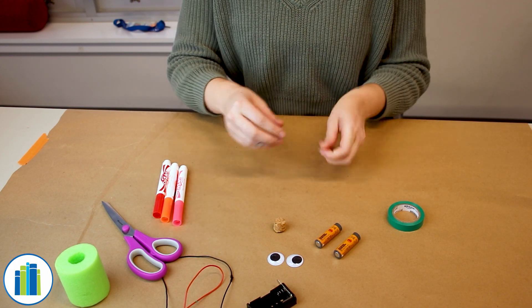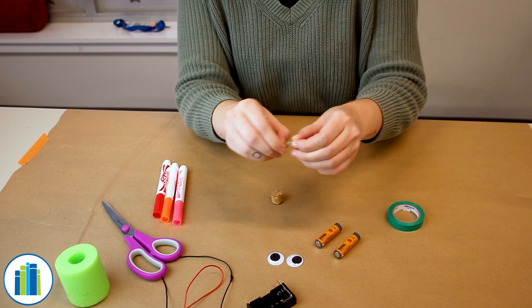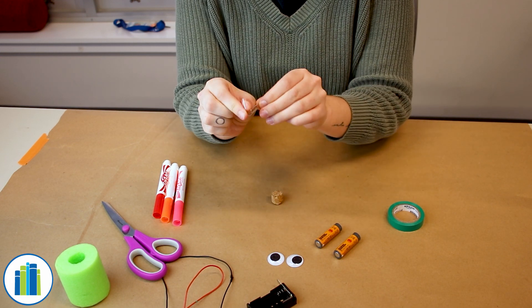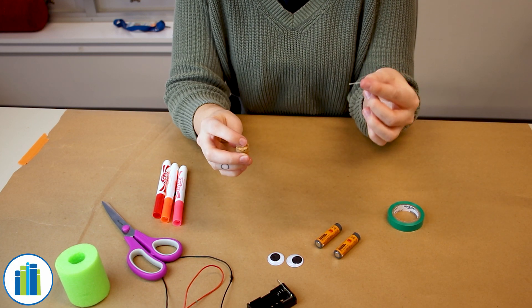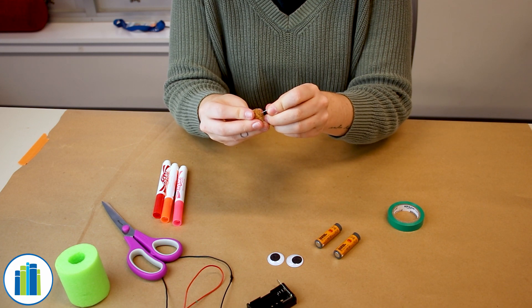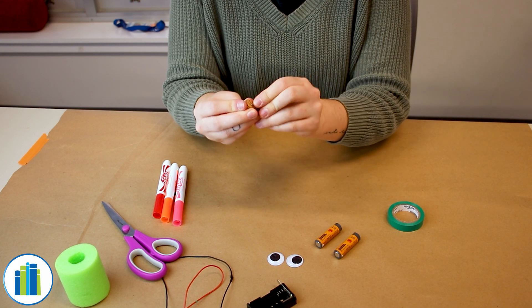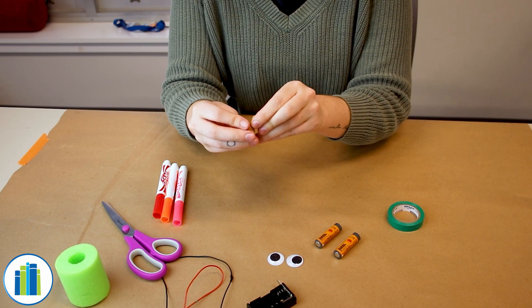So the first thing we're going to do is take the paper clip and the cork and we're going to open up the paper clip so that we have just a little metal rod. Then you're going to take the flat end of your cork and just poke a hole right in the middle of it and kind of move it around so that there's a nice little hole.